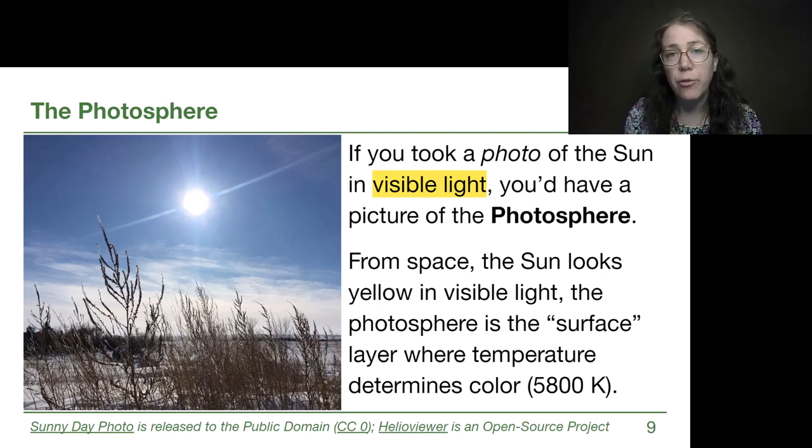Now, if we were to take a photograph of the sun on a clear day, not with our eyeballs, never look directly at the sun. But if we took a photograph, we'd be taking a photograph in visible light, the kind of light our eyes can see, and that photograph would be of the photosphere. Photo, photosphere. That's going to help us remember that that's what we see if we use visible light. We don't see any other layer if we're looking at regular visible light.